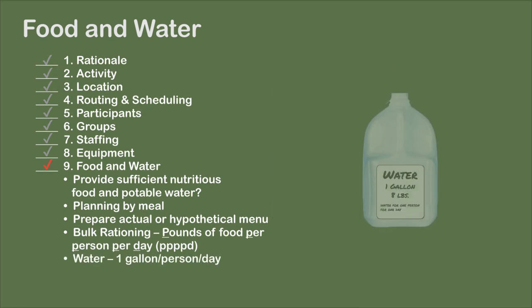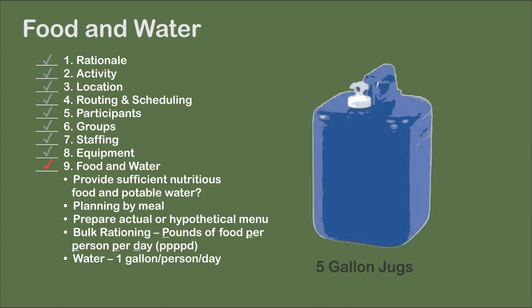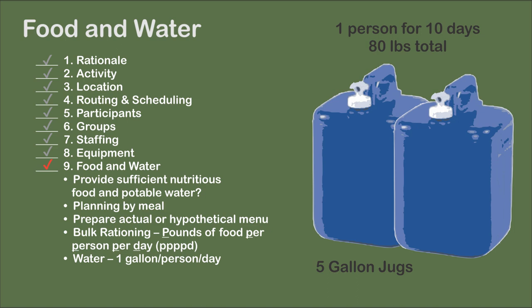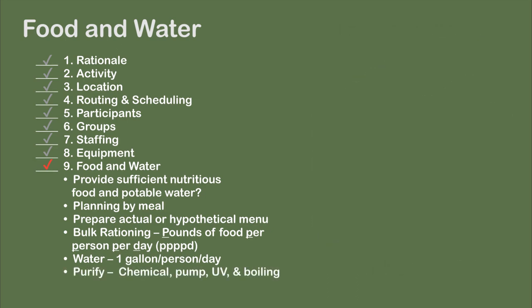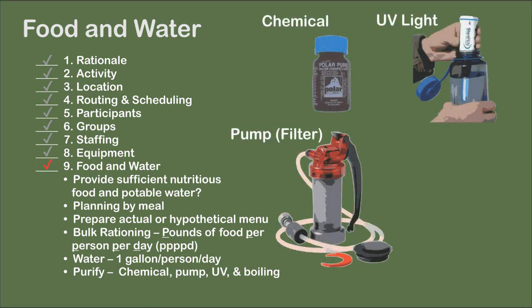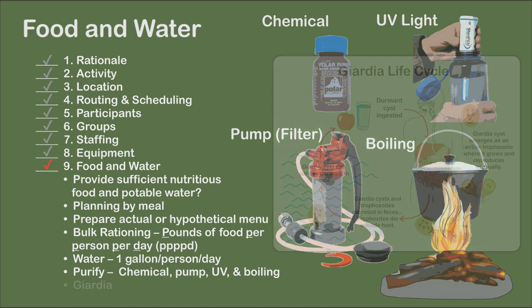Purify water or bring it with you. Plan on a gallon of water per person per day, figuring eight pounds per gallon. In brackish or salt water, you need to bring your own water, which can add significant weight to your canoes. In areas with fresh water, purification methods include chemical, pump, UV light, and boiling. Boiling water is effective but inefficient. Giardia is always a concern on inland waters.